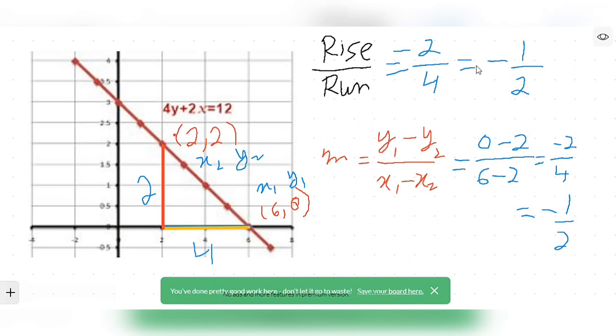As we got it from using the formula rise over run. So with the help of these two different formulas we got the same gradient.